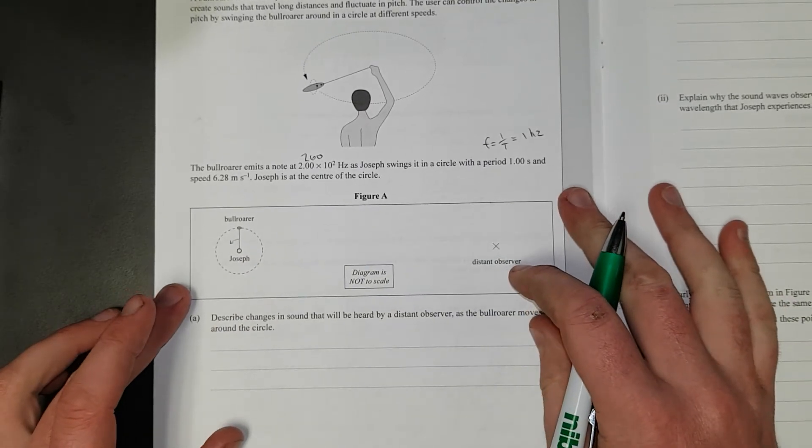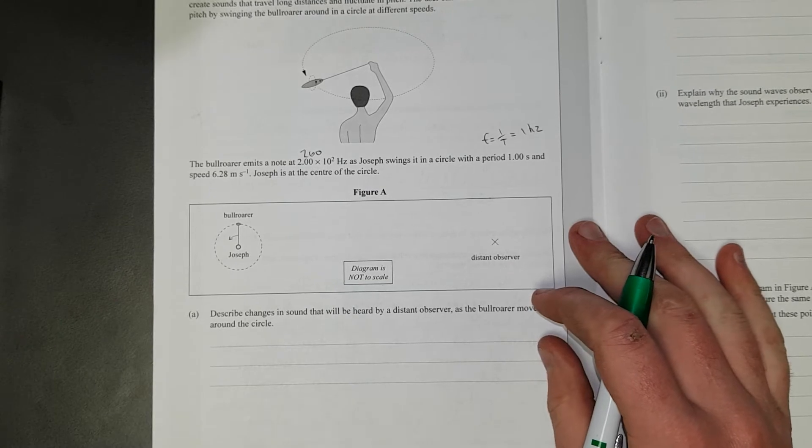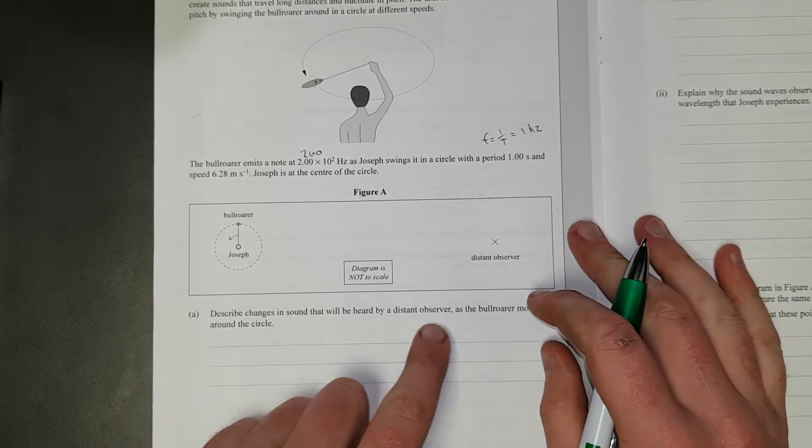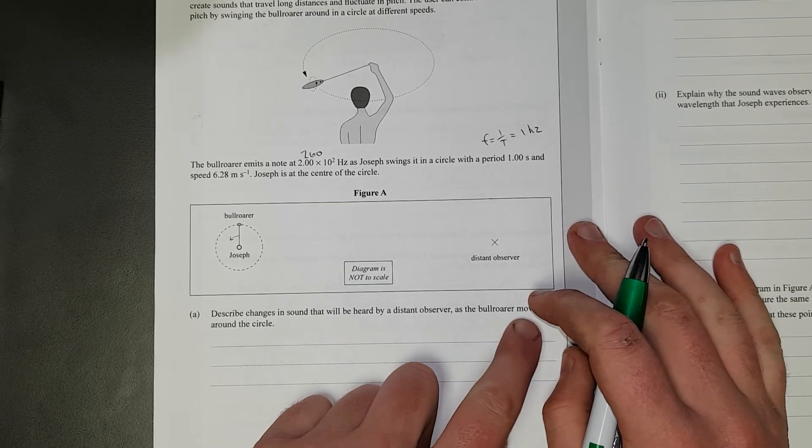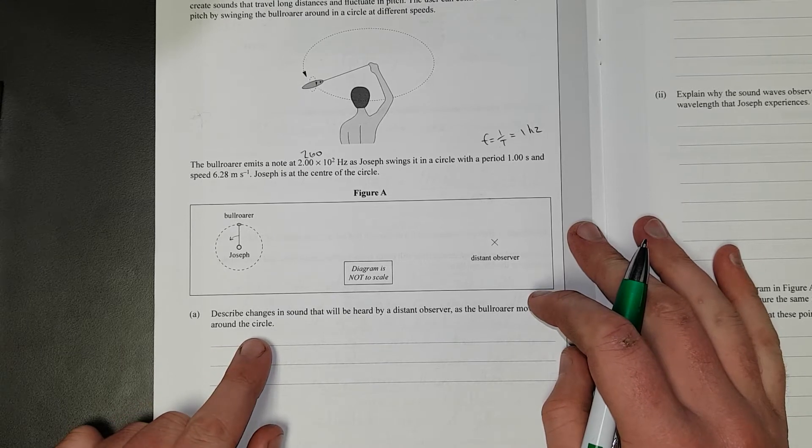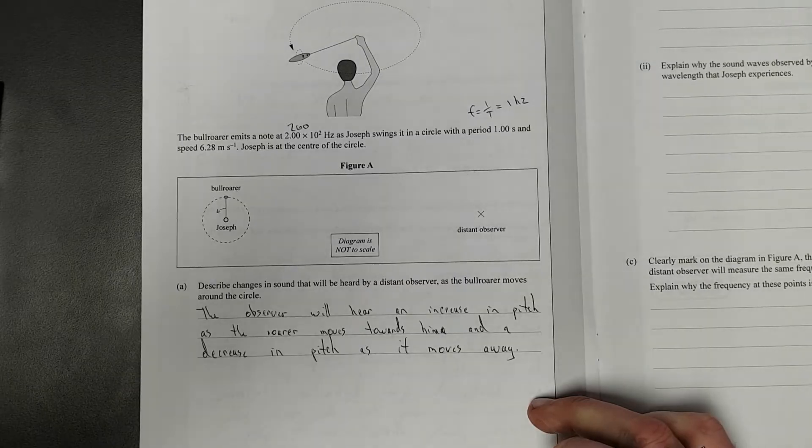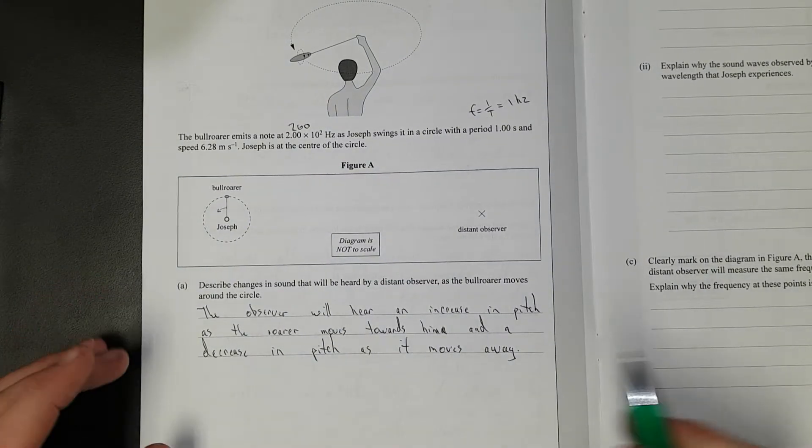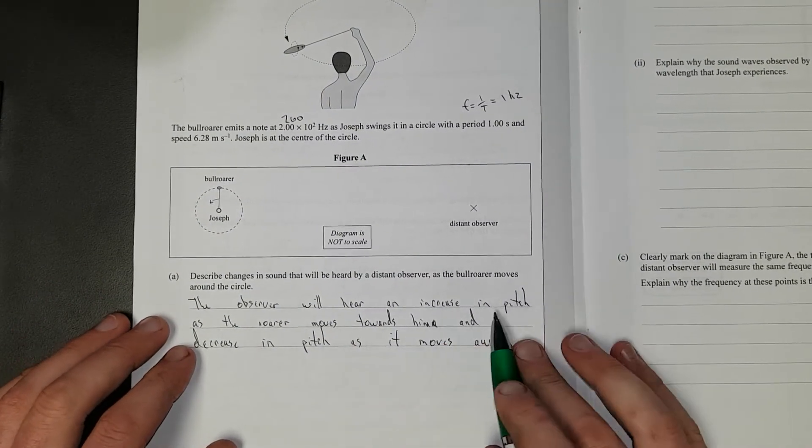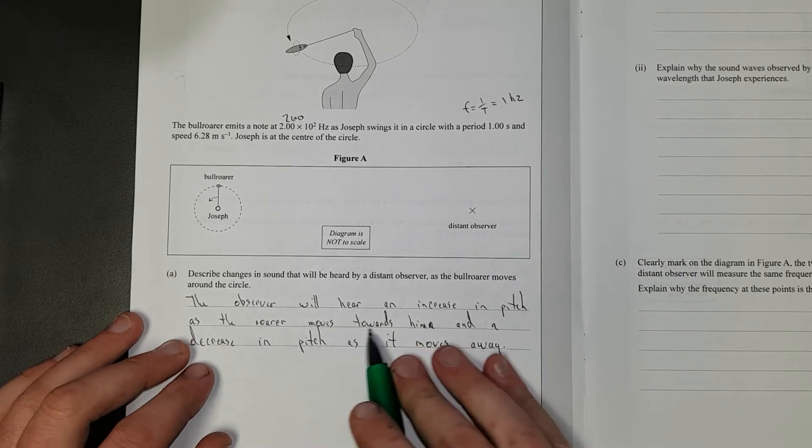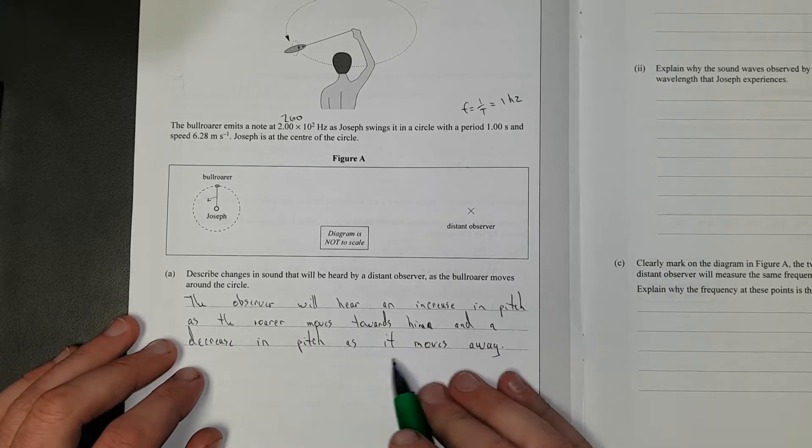Describe any changes in sound that will be heard by a distant observer as the bullroarer moves around the circle. So I'll pause the video, write the answer and then discuss. So I've said the observer will hear an increase in pitch as the bullroarer moves towards him and a decrease in pitch as it moves away.